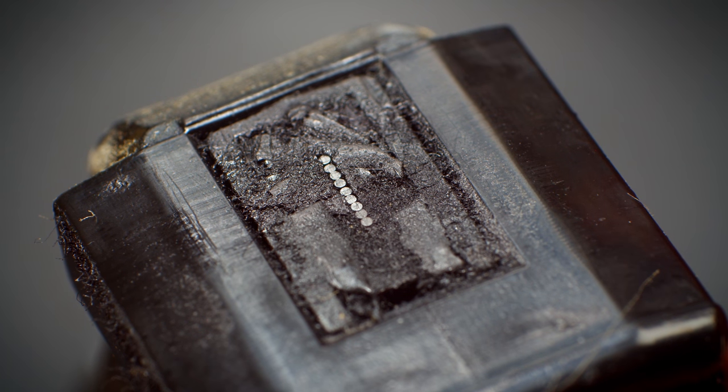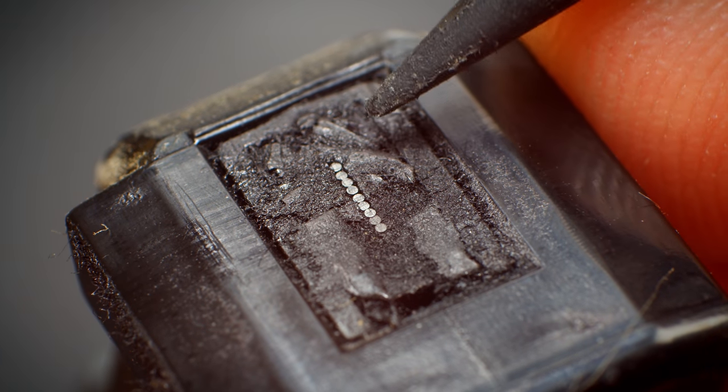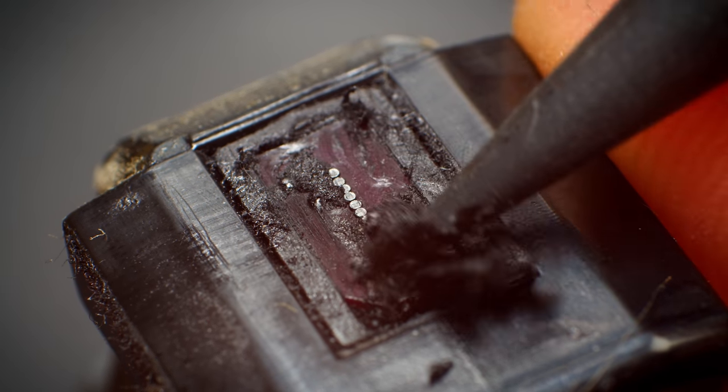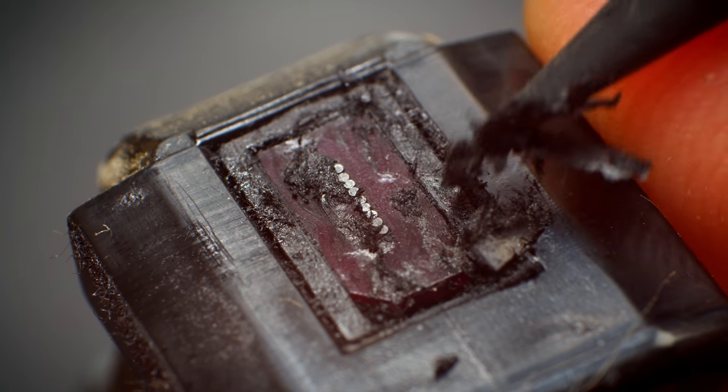After removing the other ribbon guide from the print head, we can see just how caked in it is with ink. This thing has clearly seen a lot of action, so we want to get in there and try and clean that out.